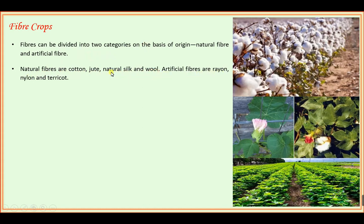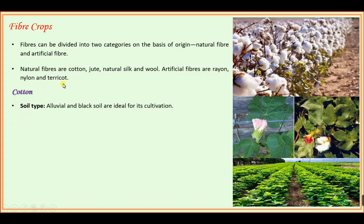Natural fibers include cotton, jute, natural silk, and wool. Artificial fibers include rayon, nylon, and terricot. Now, cotton requires different climatic conditions — the first one is soil type.